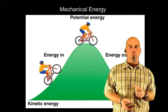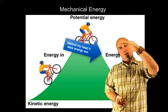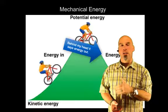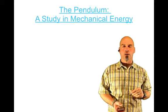With the bike example: you've got energy in as the rider goes up the hill, gaining potential energy and slowing down. Then you've got energy coming back out, converted back to kinetic energy. This entire system is mechanical energy — energy in, energy out. A fantastic example of mechanical energy is a pendulum.